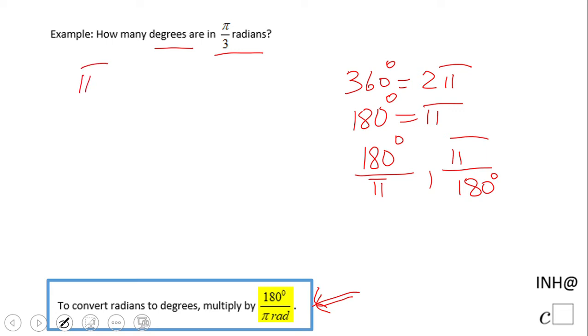So we have π over 3 radians, which is π over 3 times—and again we're going to use this conversion—180 degrees over π. π cancels out, so we have 180 over 3, which is 60 degrees. So π over 3 is 60 degrees.